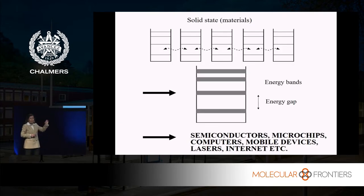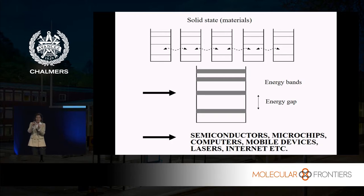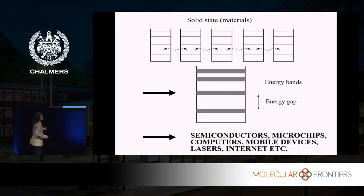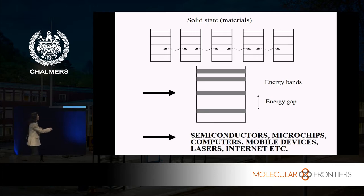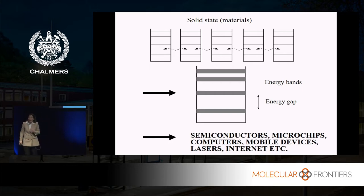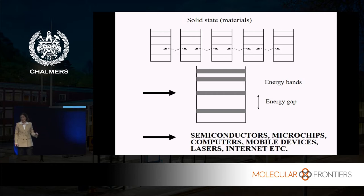Now let's imagine that we have many of these little wells. This would happen in a solid, where you have atoms organized in a lattice. The electrons are kind of close to their own atom, but they can also do a quantum mechanical thing called tunneling — they can tunnel to the next atom. Instead of discrete energy states, you form so-called energy bands. These are the allowed energies in the system and they have a little bit of width in energy. All our technology that we really love — like computers, iPhones, the internet — is based on understanding this. It's really amazing how much quantum physics has done for us.